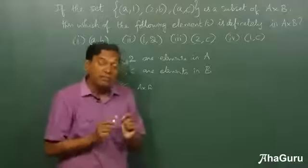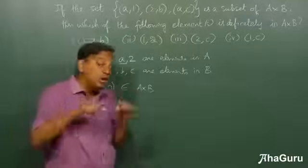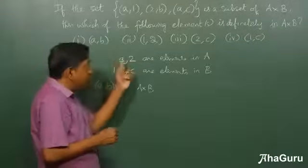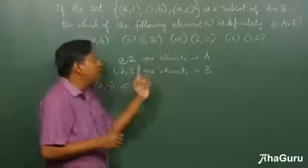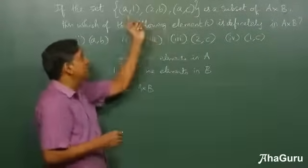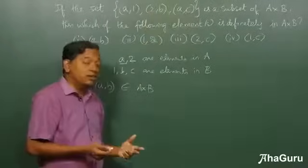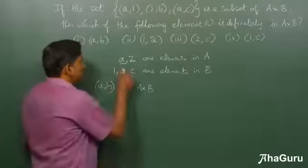But we can't also say that it's definitely not a member. We know a and 2 are elements. 1 may or may not be an element of A because we have just given a subset—we are not told that this is the full list of elements in A×B, right? So the question is, (1,2), is it definitely part of A×B? No.